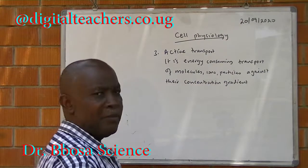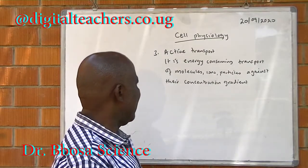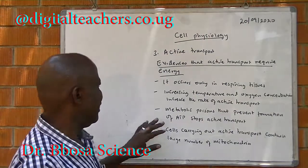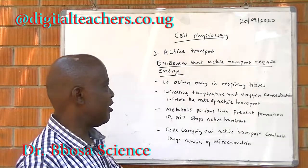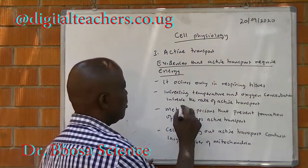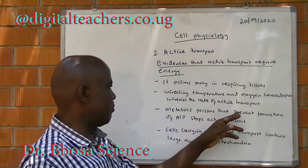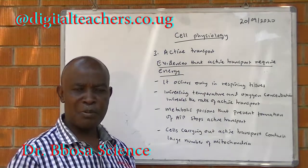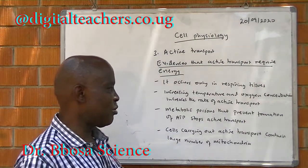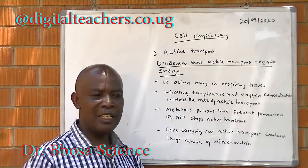Active transport is the energy-consuming transport of molecules and ionic particles against their concentration gradient. Evidence that active transport requires energy: it occurs only in respiring tissues; increasing temperature and oxygen concentration increases the rate of active transport, as oxygen is used in respiration; metabolic poisons that prevent formation of ATP stop active transport; and cells carrying out active transport contain a large number of mitochondria, which are organelles that produce energy in the cell.